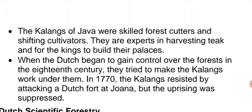In 1770, the Kalanx resisted by attacking a Dutch fort at Jayona. They protested and attacked the Dutch fort at Jayona, but the uprising was suppressed by the Dutch.